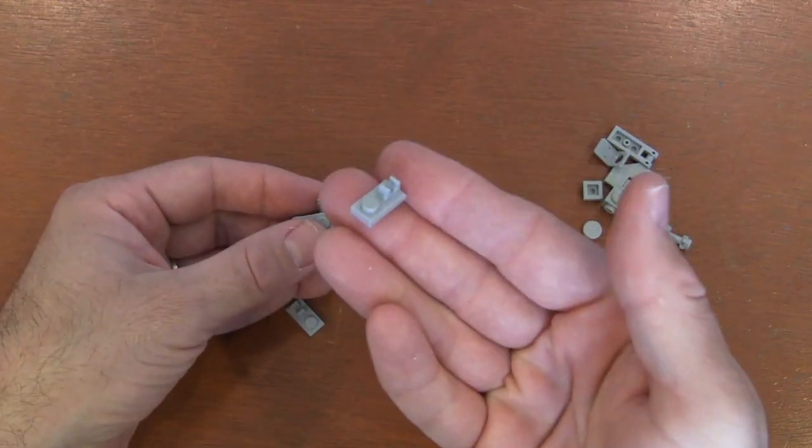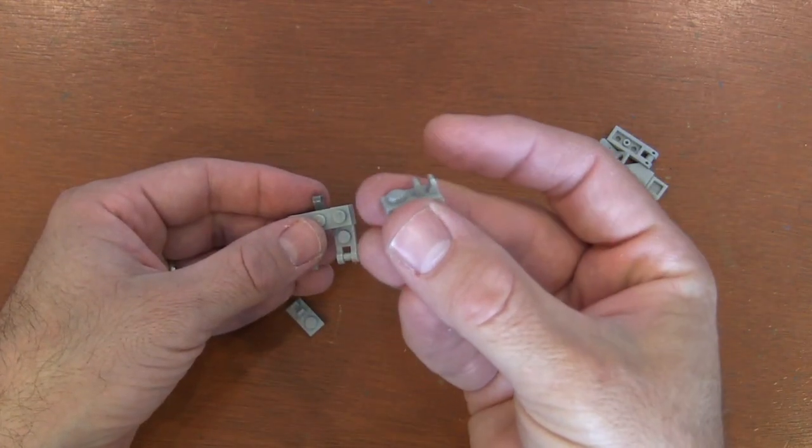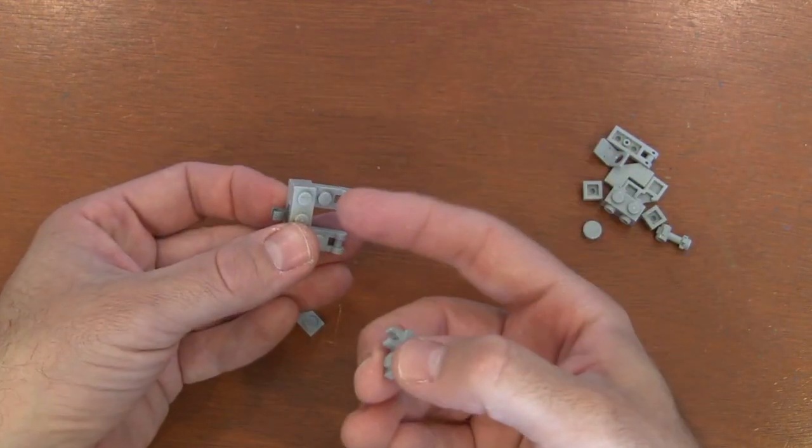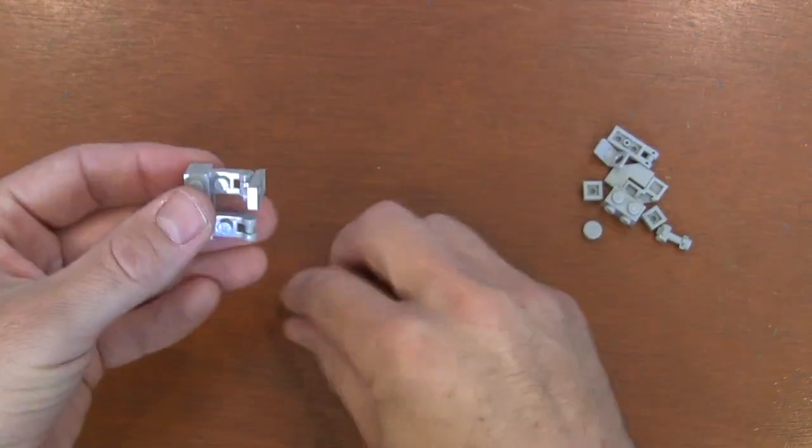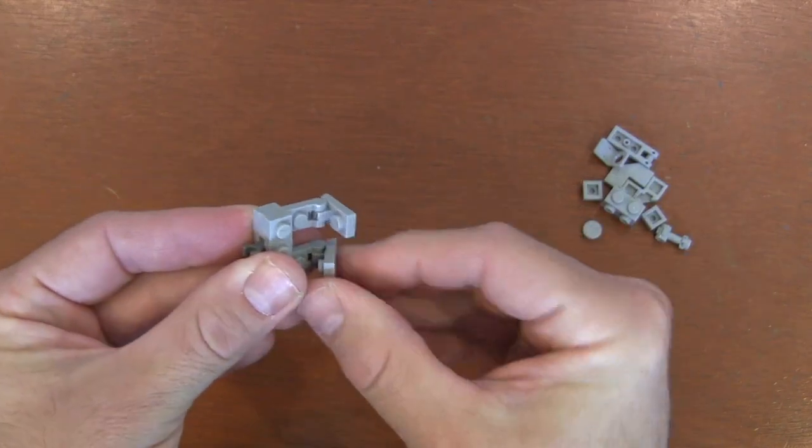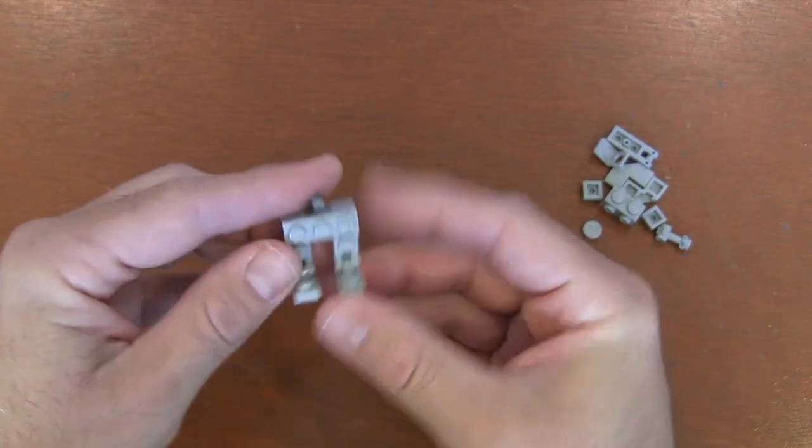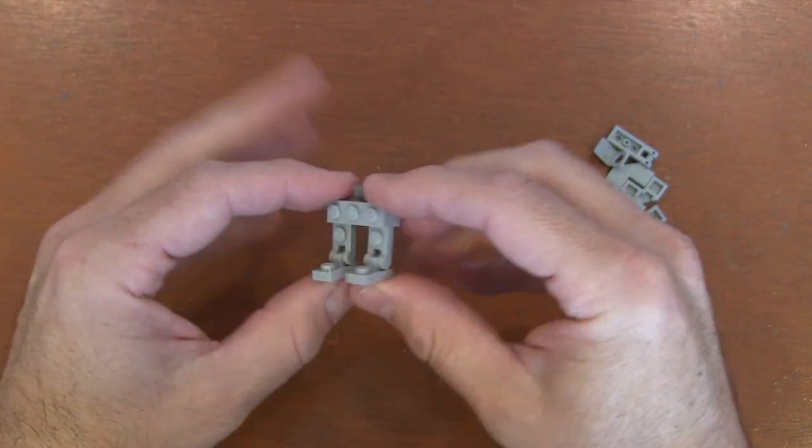And to do the feet, I'm going to grab one of these 1x2 plates with the clip on top. And I'm going to put that clip onto the handle of my 1x2 plate over here. And I've got the foot to my walker. And they do move, which is nice. You can give some posability and movement to your walker. But here are the legs and feet.